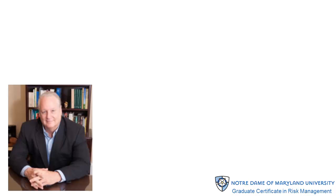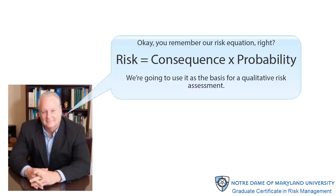The generic risk assessment process begins with our generic risk equation: risk equals consequence times probability. We're going to use it as the basis for a qualitative risk assessment by breaking the two factors — consequence and probability — down into their most essential components.